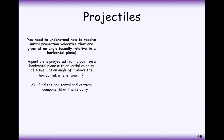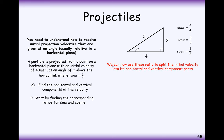So let's go through a small question. A particle is projected from a point on a horizontal plane with an initial velocity of 40 meters per second at an angle alpha above the horizontal where tan alpha is equal to 3 over 4. We've seen these types of questions before where we have to create our own little right angle triangle on the side so we know what sin alpha and cos alpha are. Now we can use these ratios to split up the initial velocity into its horizontal and vertical parts.